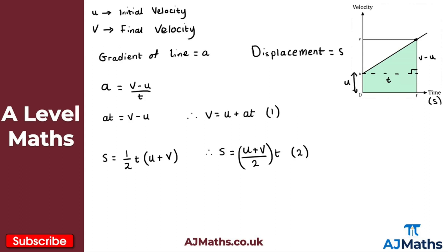That's the first two SUVAT equations derived. The remaining three results are just obtained using these two. You need to be able to derive equations one and two from the velocity-time graph, and then the remaining three just come from using those two equations. What I'm going to do is take equation one and substitute it into equation two to get the next equation.